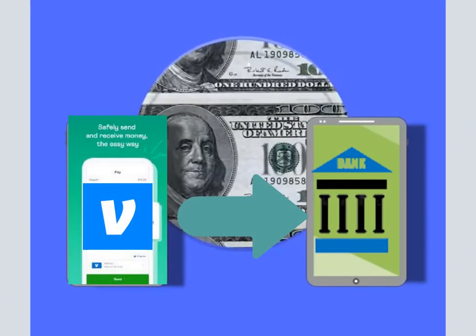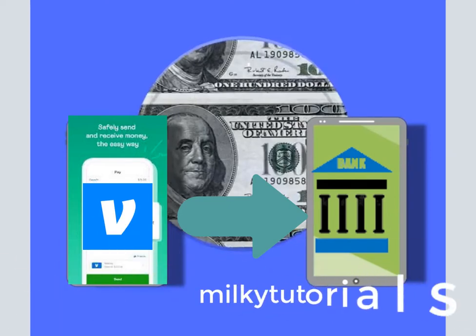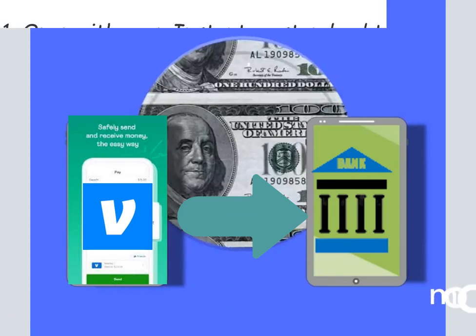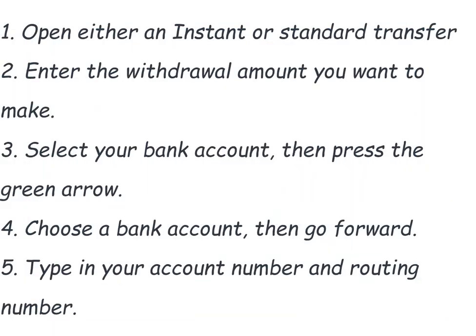You can also withdraw money from Venmo using a bank account. Send the money to your bank account first, then withdraw from there. Just follow these steps to withdraw using a bank account: 1. Open either an instant or standard transfer. 2. Enter the withdrawal amount you want to make. 3. Select your bank account, then press the green arrow.